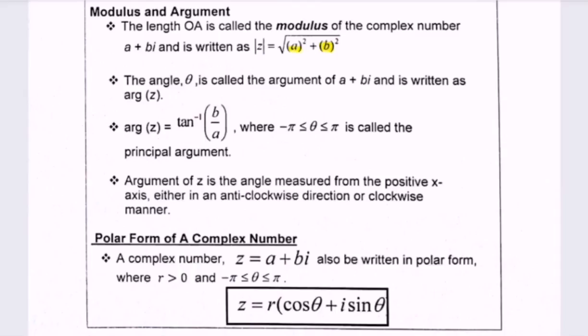So here we have the polar form of a complex number. A complex number z equals a plus bi can also be written in polar form. This one we call the Cartesian form.